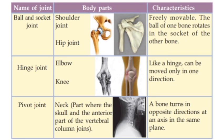Pivot joint — found where the skull and the anterior part of the vertebral column join. The bone turns in opposite directions at an axis in the same plane.